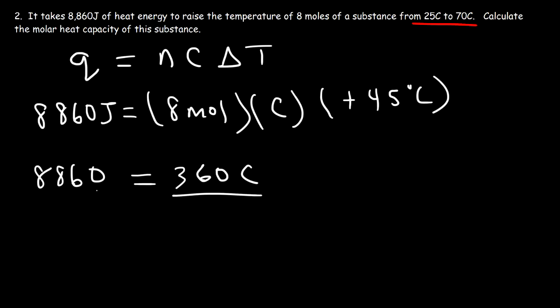So now to calculate the value of C, we need to divide both sides by 360. So the molar heat capacity is 8,860 divided by 360, and so it's going to be 24.6 joules per mole per Celsius.